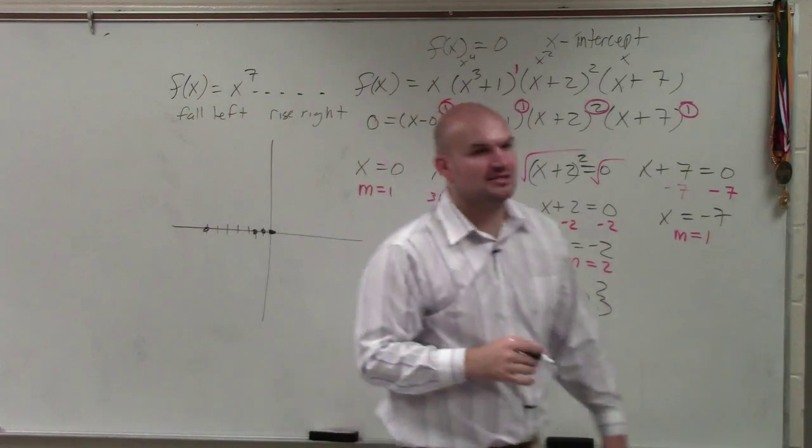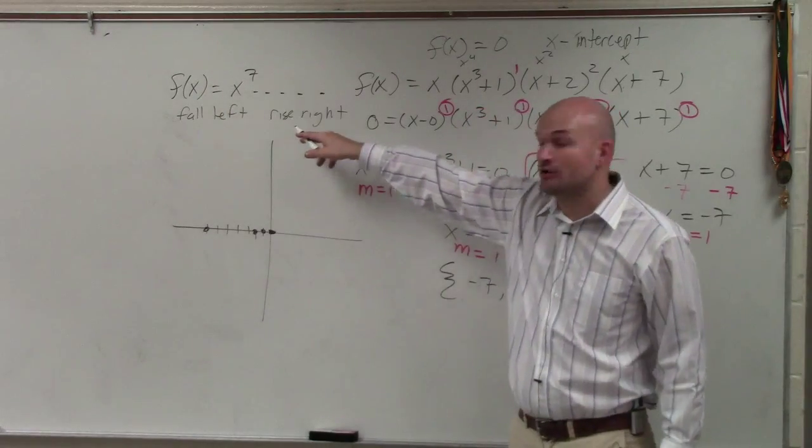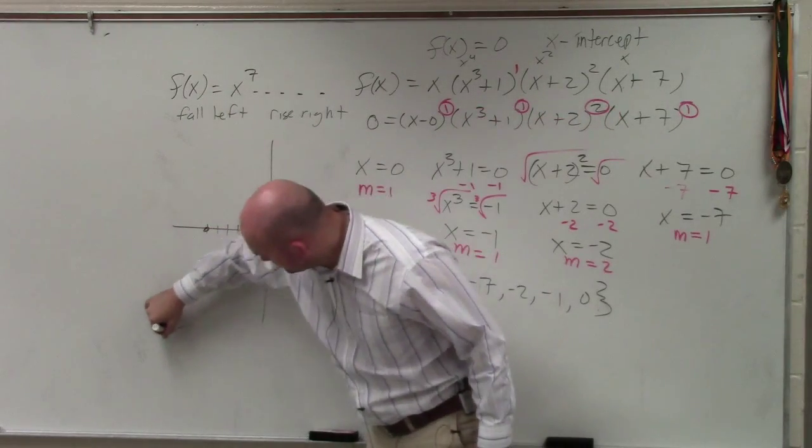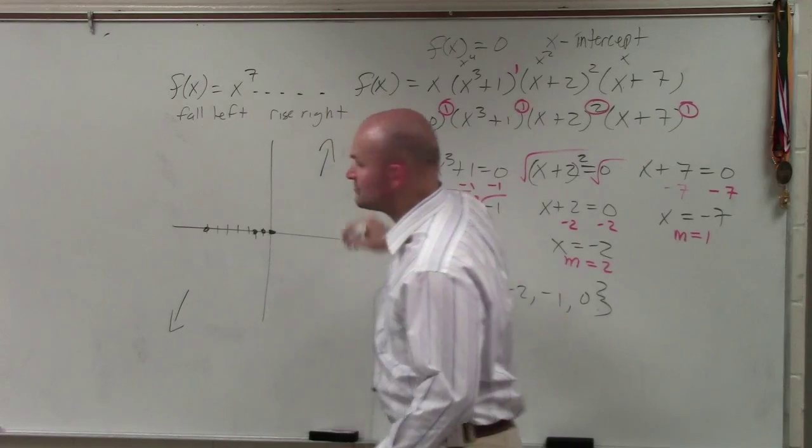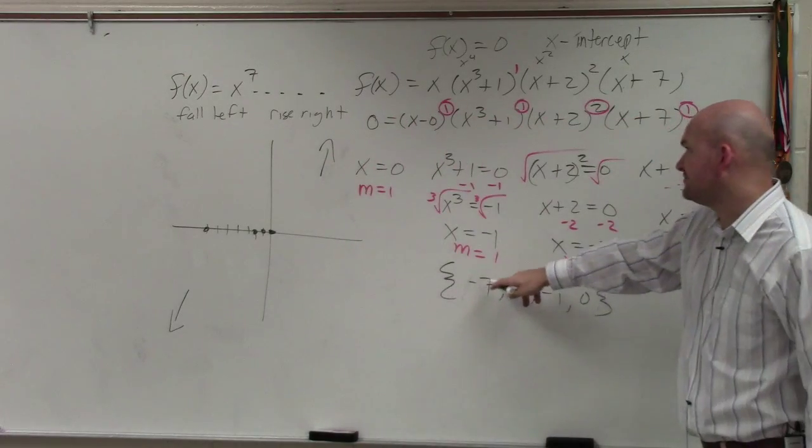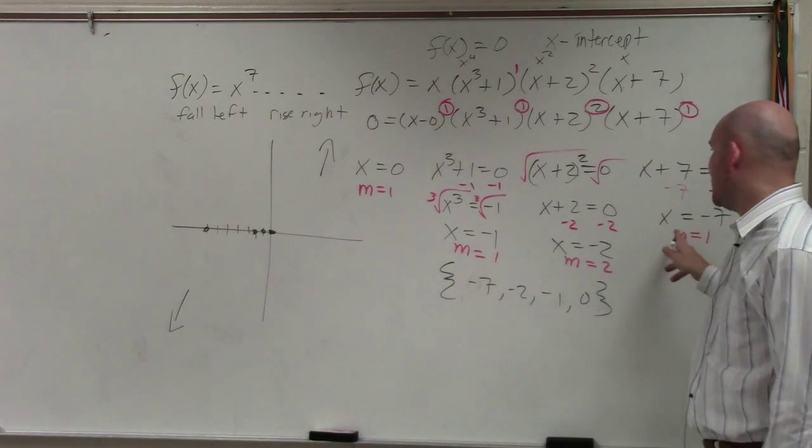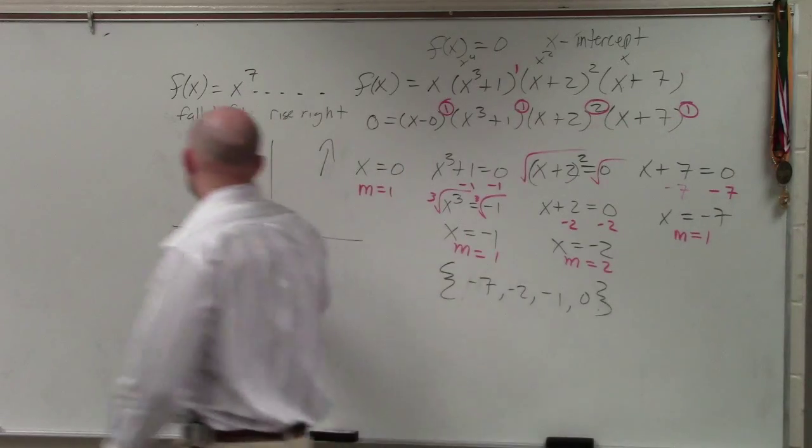So those are all where the graph crosses. Now, by knowing my end behavior, I know the graph falls left and rises right. I know negative 7 is an odd, so that means the graph crosses.